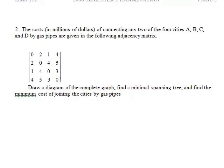The costs in millions of dollars of connecting any two of the four cities A, B, C and D by gas pipes are given in the following adjacency matrix. So here I'd start by actually putting the A, B, C, D on there since when you're given a problem like this we're assuming here that those are in order. So that's what we're looking at.